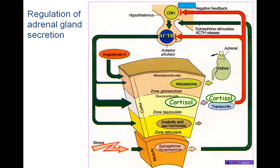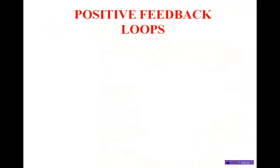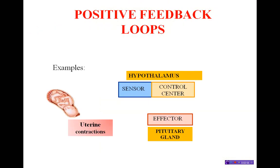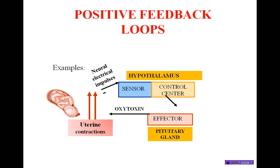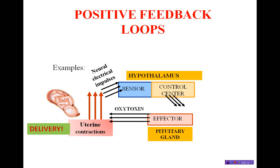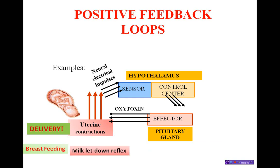In addition to inhibitory feedback, there are also positive feedback loops. One example is the uterine contractions that occur during labor — the contractions stimulate the hypothalamus to stimulate oxytocin release from the pituitary, which causes greater uterine contractions, creating a positive snowball or augmentation until delivery. Similarly, this oxytocin positive feedback occurs in the milk letdown reflex during breastfeeding.